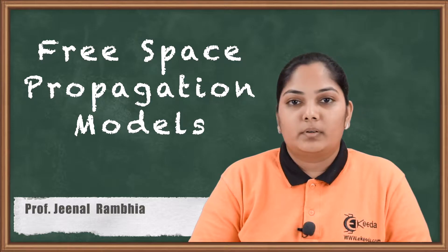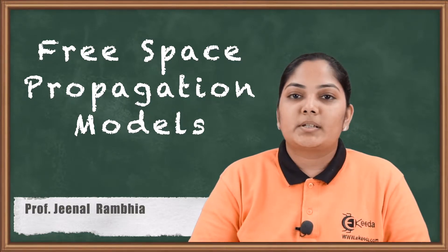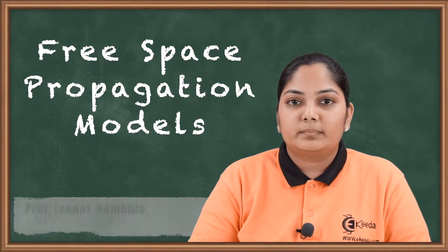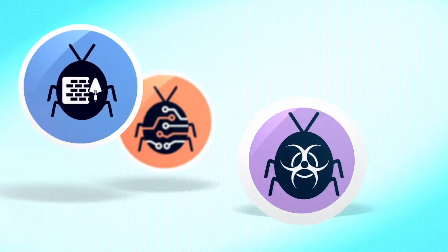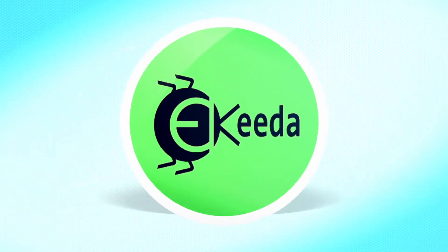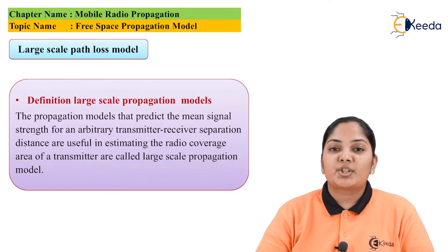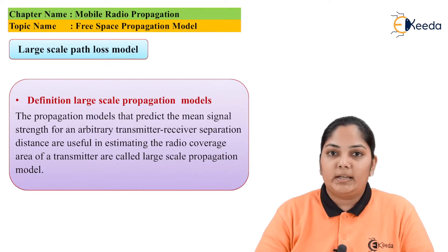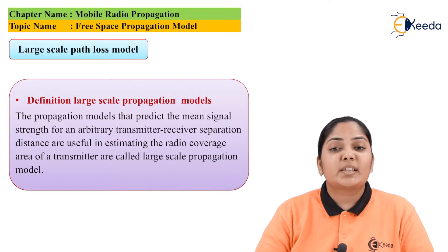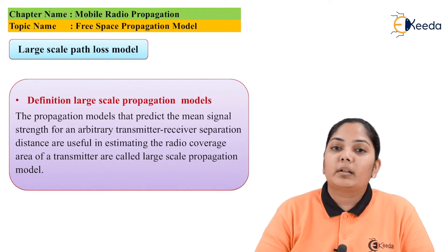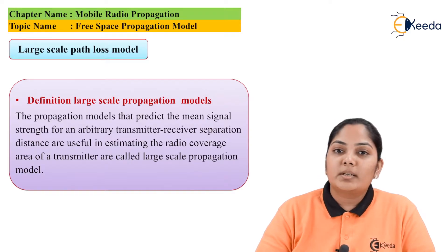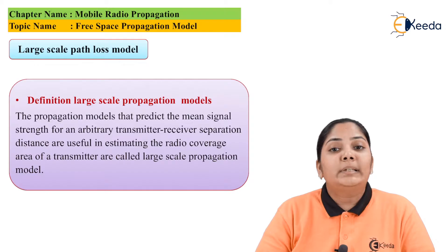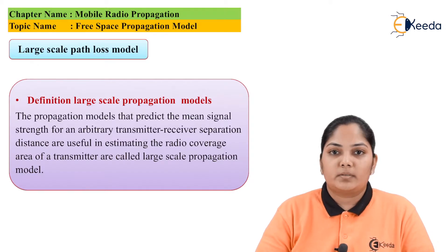There are various kinds of path loss. The first one is called the large scale path loss model. The propagation model that estimates the mean signal strength of the transmitted signal in order to identify the coverage area, when the transmitter-receiver distance is very large, is called the large scale path loss model.